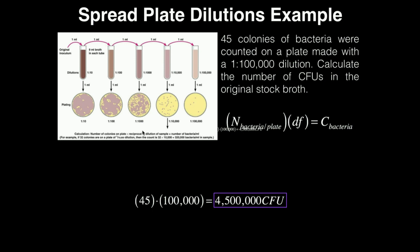Let's do an actual example problem. We have a situation where 45 colonies of bacteria were counted on a plate made with a 1 to 100,000 dilution. Calculate the number of colony-forming units per milliliter in the original stock broth. Using our formula — number of bacterial colonies per plate times the dilution factor — we get 45 times 100,000, which equals 4,500,000 colony-forming units per milliliter in the original sample.